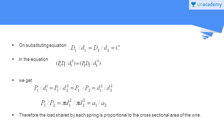Substituting D₁/d₁ = D₂/d₂ = c into the equation P₁D₁/d₁³ = P₂D₂/d₂³, we get P₁/P₂ = d₁²/d₂² = (π d₁²)/(π d₂²) = A₁/A₂. Therefore, the loads acting on the two springs of a concentric spring are proportional to the cross-sectional areas of their respective wires.